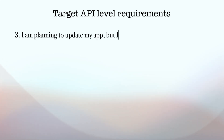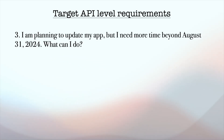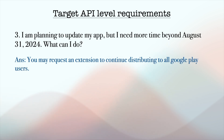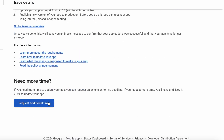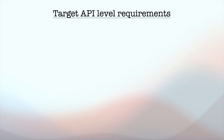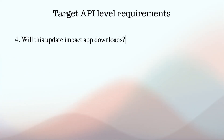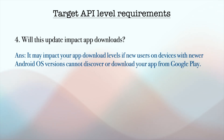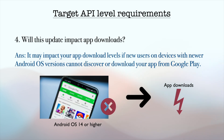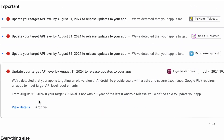Next: I am planning to update my app but I need more time beyond August 31st, 2024 — what can I do? You may request an extension to continue distributing to all Google Play users. Go to the policy status page and request for additional time. If you request more time, you will have until November 1st, 2024 to update your app. Will this update impact app downloads? Yes — if you don't update your app with the latest target API level, new users on devices with newer Android OS versions cannot discover or download your app from Google Play. So don't delay — update your apps with target SDK version 34 or higher.